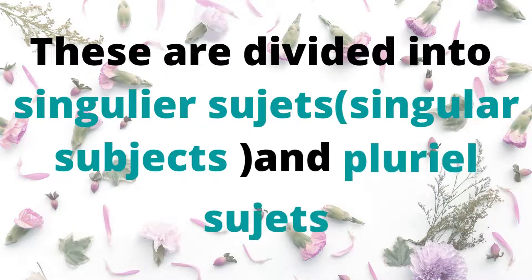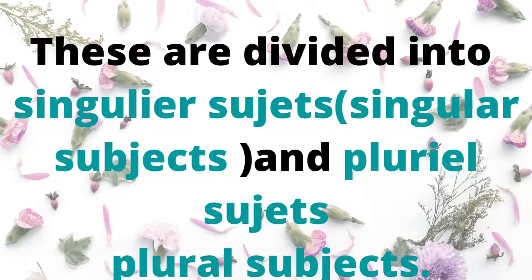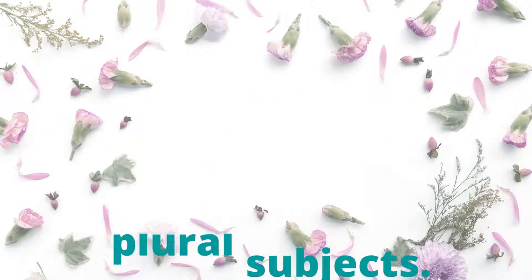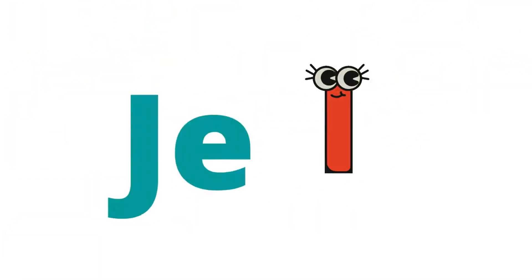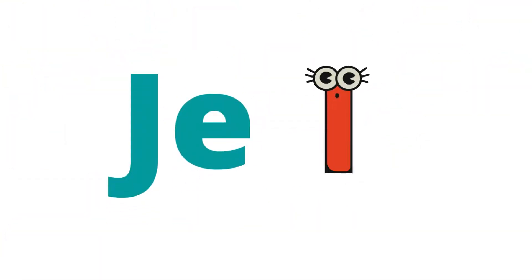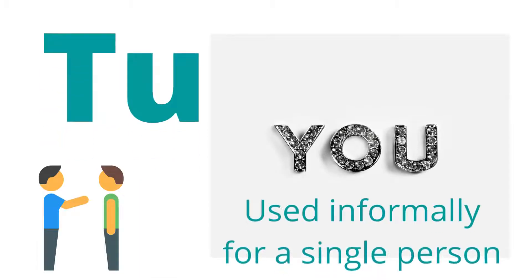So in French, these are divided into two categories: singular subjects and plural subjects. Let's start with singular subjects first. Je means I. Tu means you.